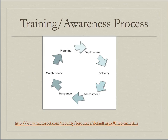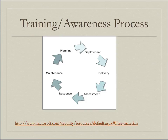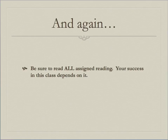Finally, here is a graphic showing the training and awareness process. It consists of planning — knowing who your audience is and what you're trying to achieve — then deployment, bringing people into rooms, developing lesson plans, and delivering the training. Next is assessing the training to make sure you're achieving the outcomes you expect, which can be part of your regular security assessments, then responding to the results of assessments, and finally maintenance — modifying your training and awareness processes to bring results closer to the outcomes you expect. Be sure to read all your assigned material, and if you have any questions, do not hesitate to ask.